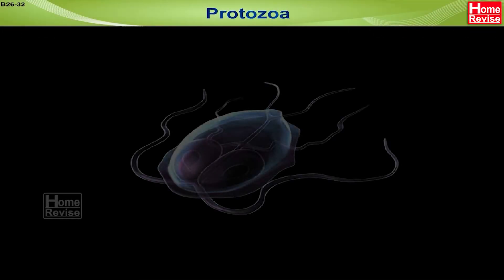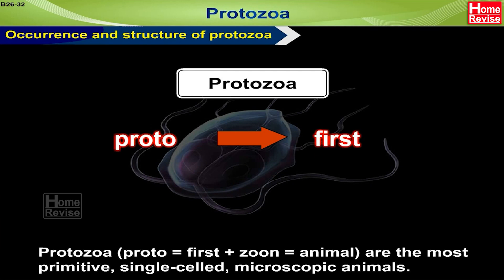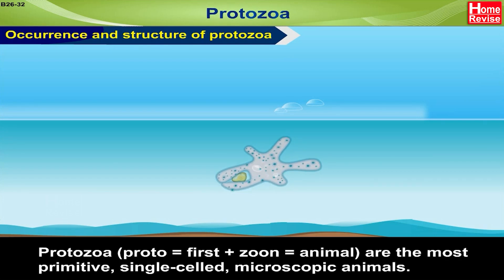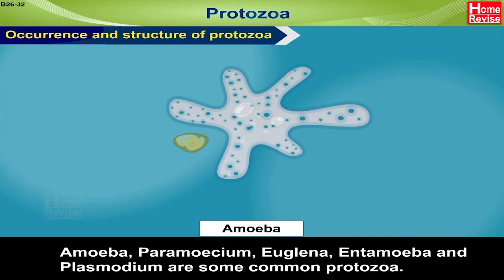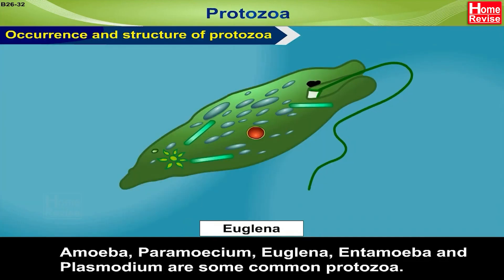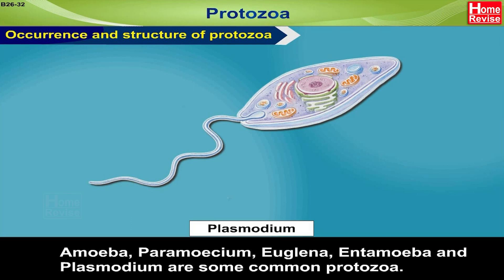Protozoa: Occurrence and Structure. Proto means first and zoon means animal. Protozoa are the most primitive single-celled microscopic animals. Amoeba, Paramecium, Euglena, Entamoeba and Plasmodium are some common protozoa.